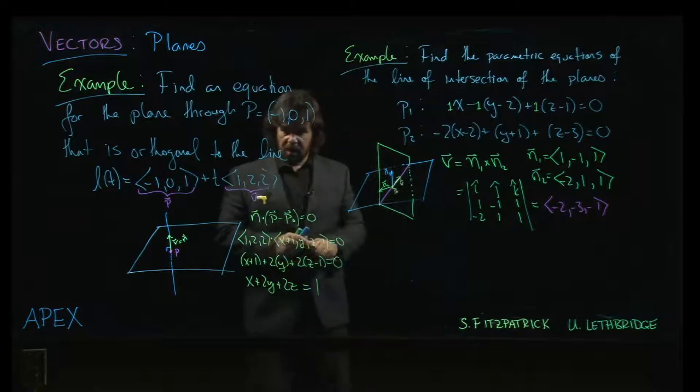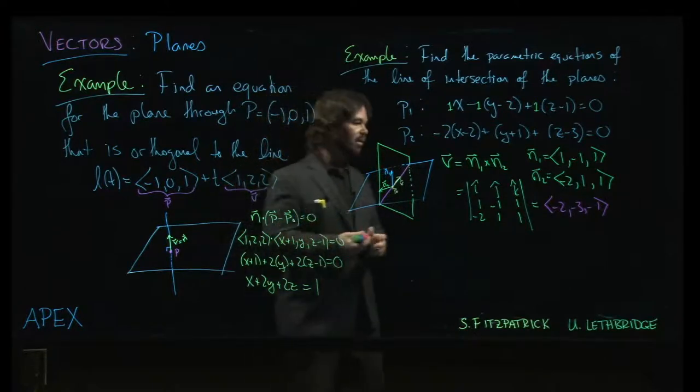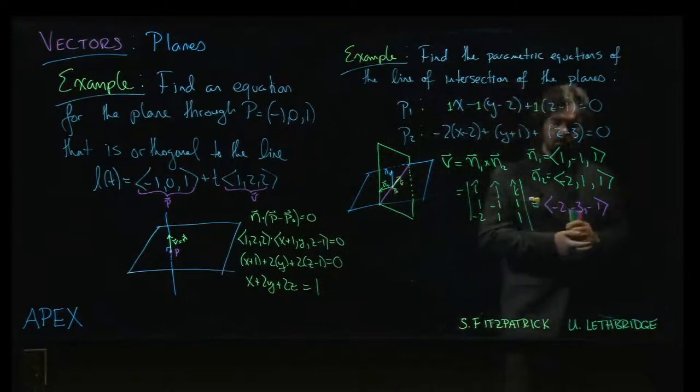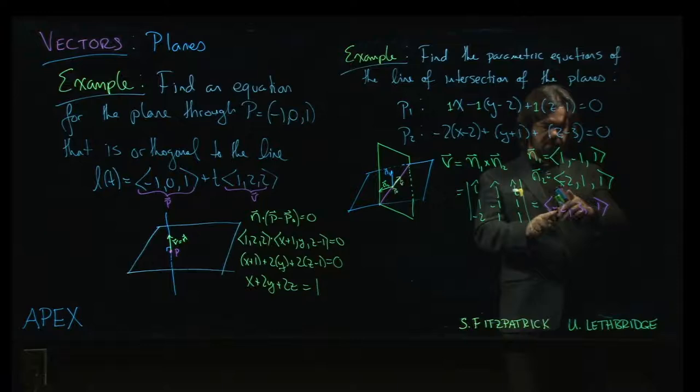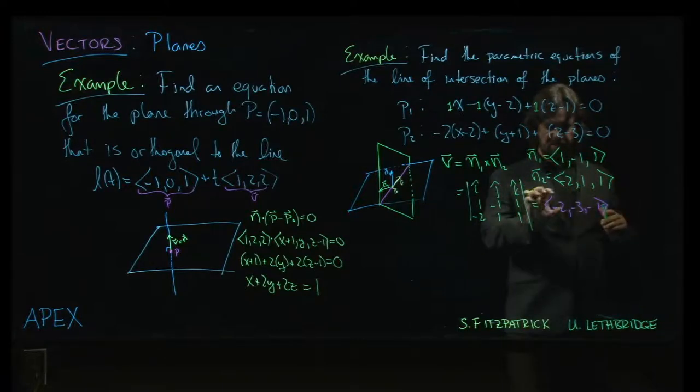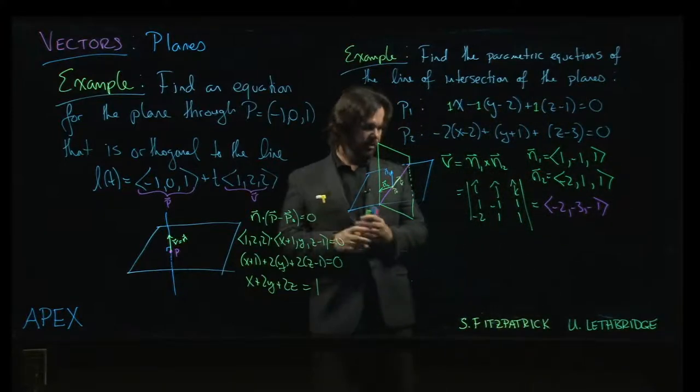And because we were never 100% confident that we did these right, there's always room for sign errors, we quickly check our dot products to make sure things have worked out. So minus 2 plus 3 minus 1, that adds up to 0. 4 minus 3 minus 1, adds up to 0. So this is indeed orthogonal to both normal vectors. So we have the direction vector for our line.